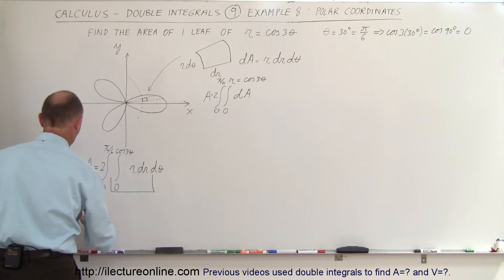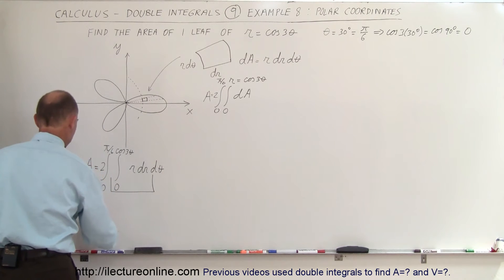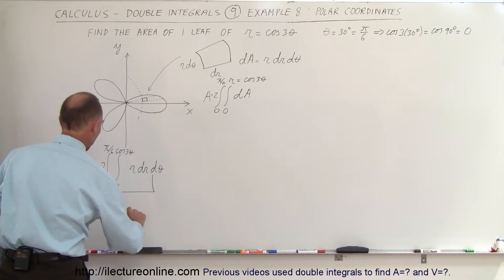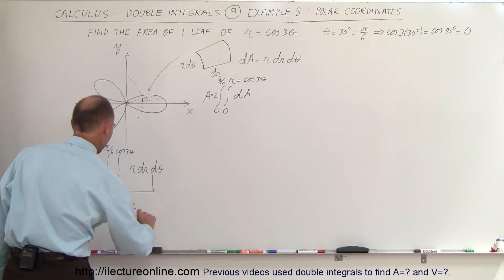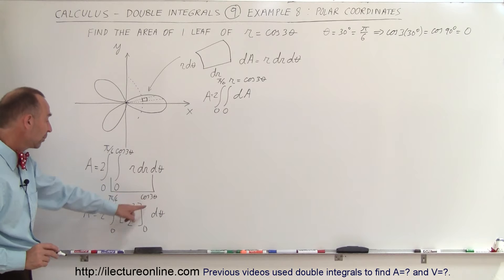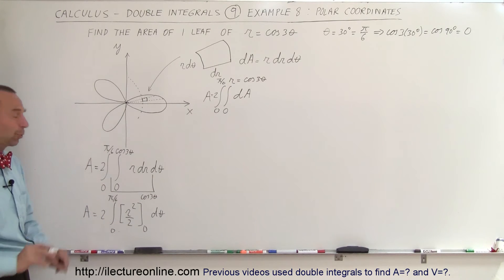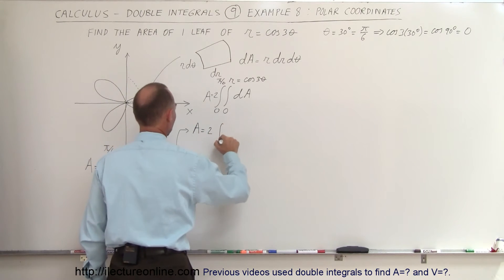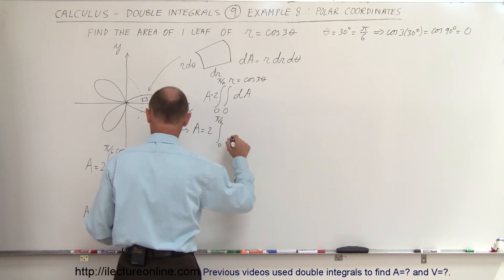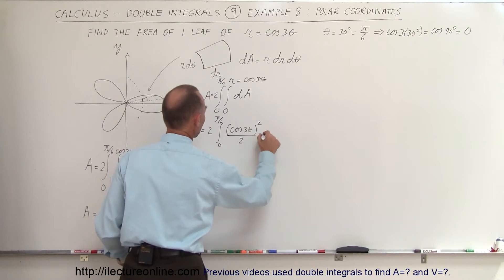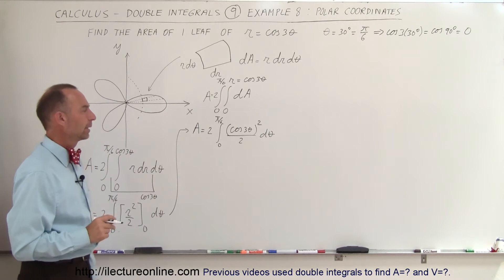Integrating over R, we get: A equals 2 times the integral from 0 to pi over 6, times the quantity R squared over 2, evaluated from 0 to cosine of 3 theta, d theta. Plugging in the upper limit gives cosine of 3 theta squared; the lower limit gives 0 so it drops out. We can rewrite this as A equals 2 times the integral from 0 to pi over 6 of cosine squared of 3 theta divided by 2, d theta.